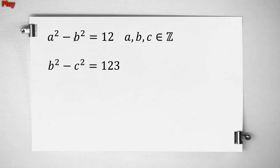a squared minus b squared equals 12, b squared minus c squared equals 123. a, b, c are integers. We want to find a, b, c.